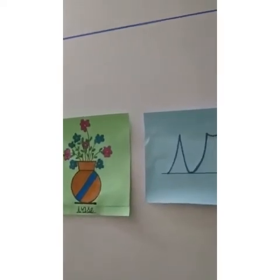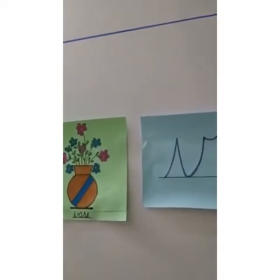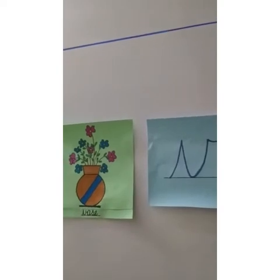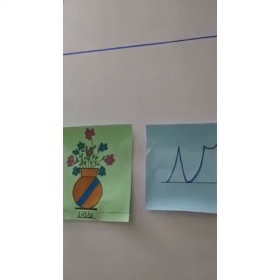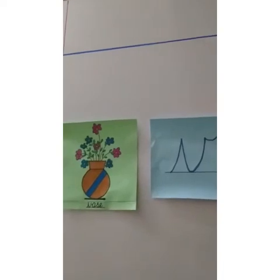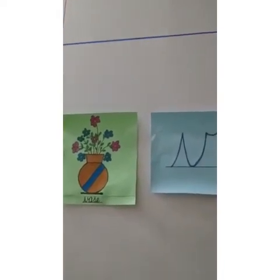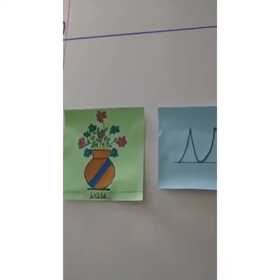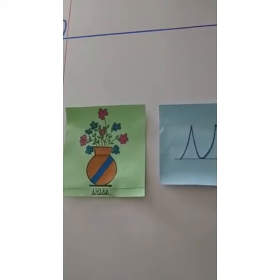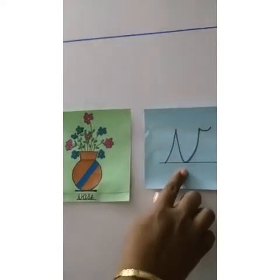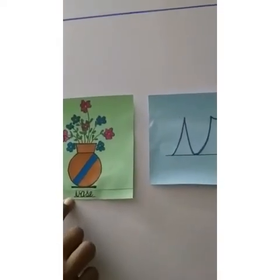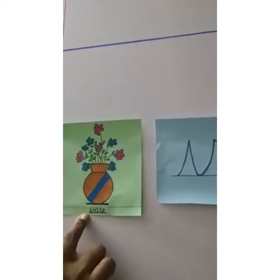A vase is used to keep flowers. We keep a flower vase at home to make our room or our home look beautiful. We also keep flowers in a vase of water to keep flowers fresh for a longer period of time. So, we have V for vase. The object vase begins with the letter V.